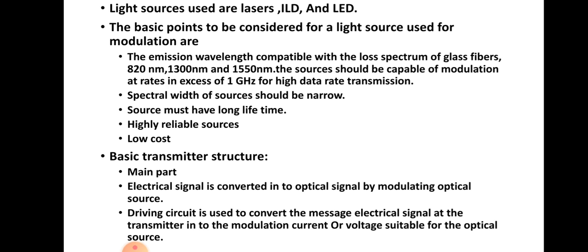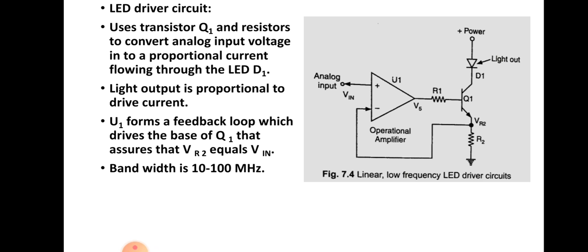The major components of the transmitter are the light source and the driving circuit. There will also be some protection and voltage supply not shown in the block diagram. The driver circuit is used to convert the message electrical signals at the transmitter into the modulation current or voltage suitable for the optical source. Next, we will go to the LED driver circuit — there are LED driver circuits and laser driver circuits used.